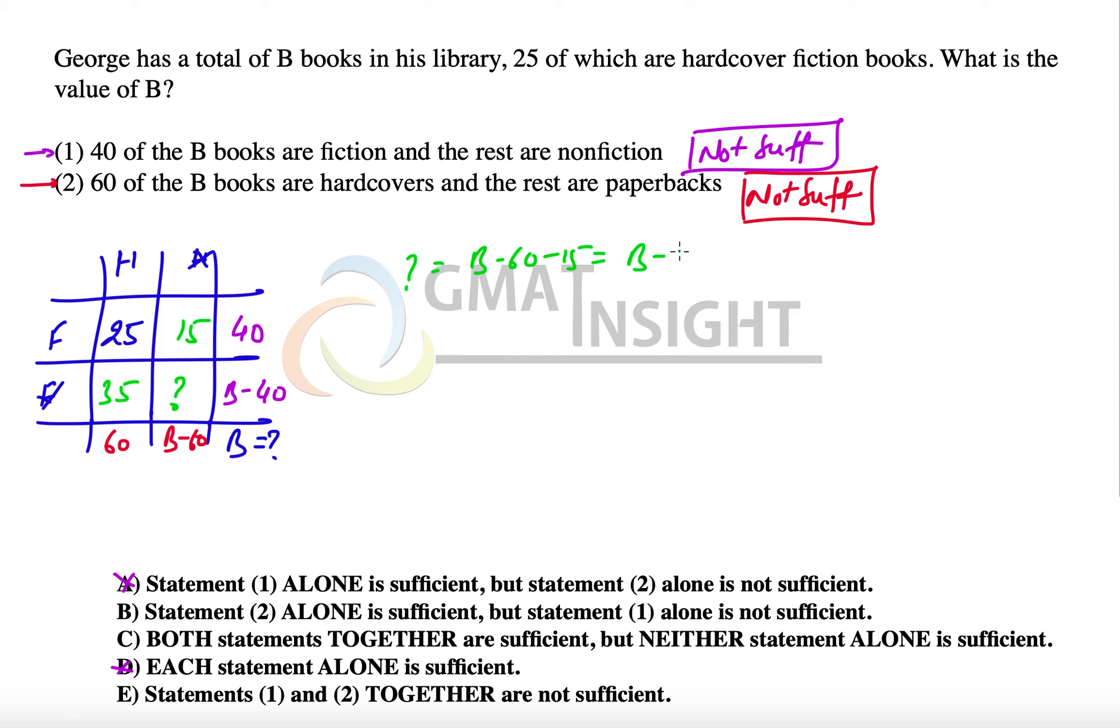And if you look through the row, then it will be B minus 40 minus 35, that means again B minus 75. That means we are not getting the value of this particular region, and hence we can't calculate the value of B. So even after combining the two statements, we don't have sufficient information, and therefore the answer to the question becomes option E. I hope you like the explanation, thank you so much.